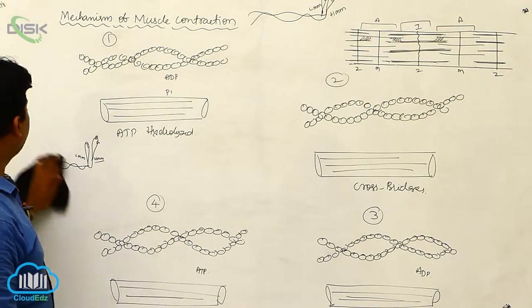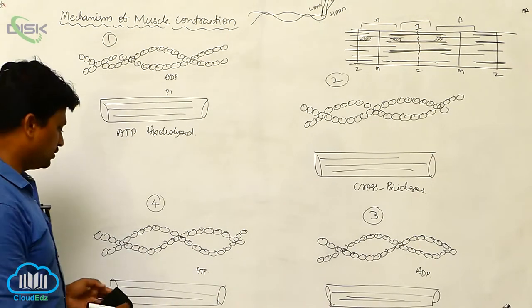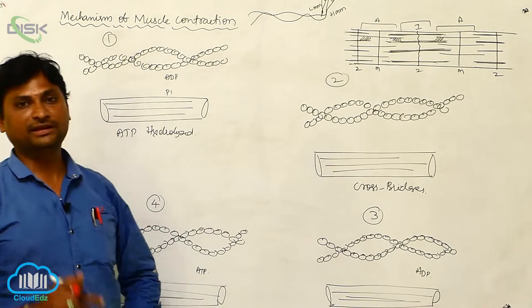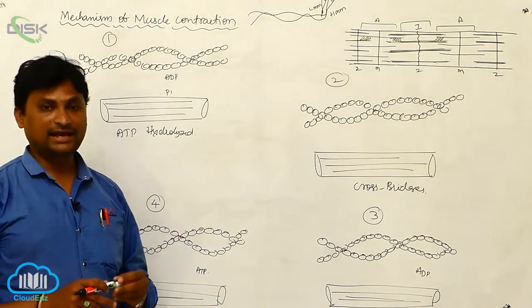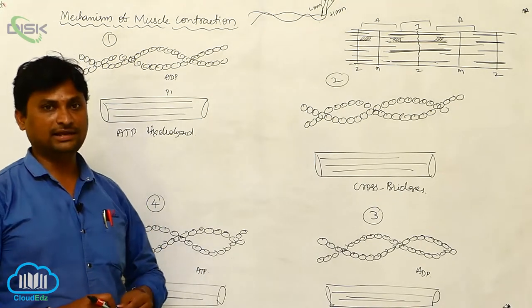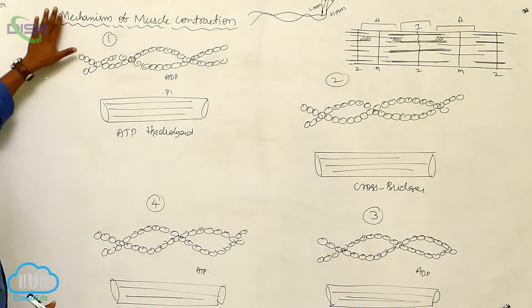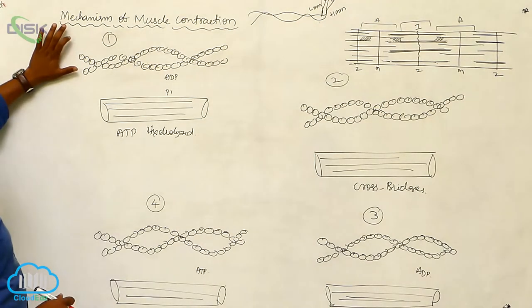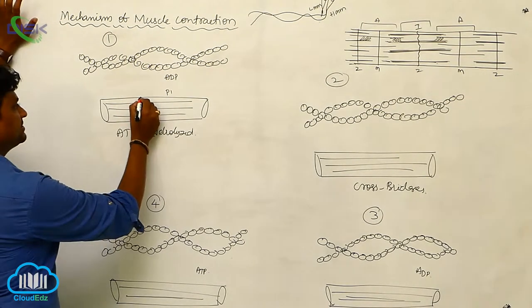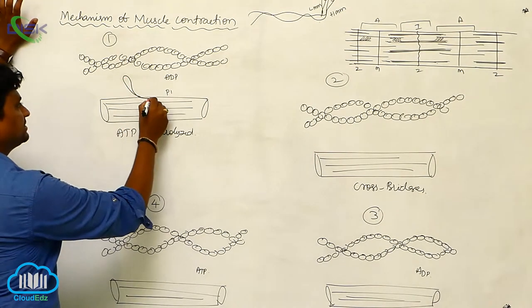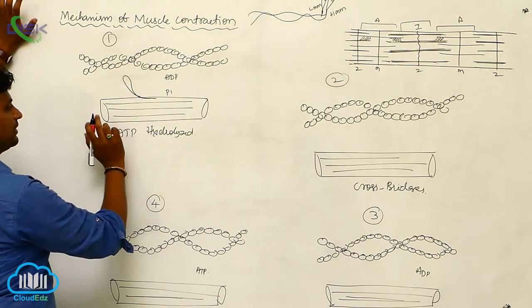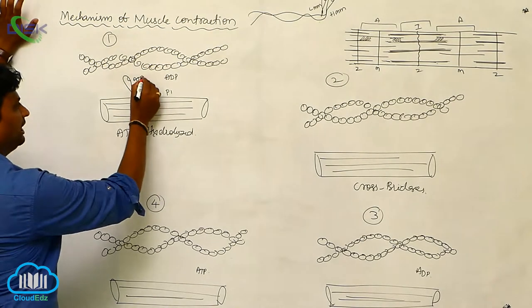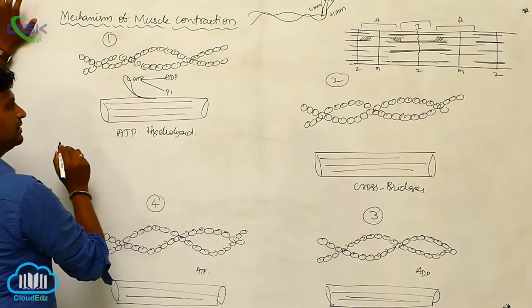Now we discuss the function of muscle contraction — how the mechanism is involved. Muscle contraction is explained by the scientist Huxley. The first step of muscle contraction involves the myosin head receiving ATP molecules, which are converted to ADP and inorganic phosphate.